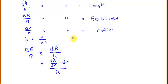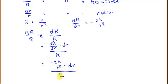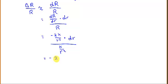The derivative of the resistance with respect to the radius is negative 2k over r cubed (think of it as k times r to the negative second power). So the numerator becomes negative 2k over r cubed times dr, and the denominator is k over r squared. We then invert and multiply.